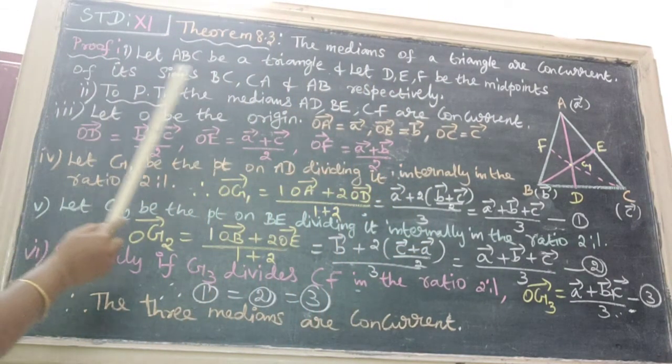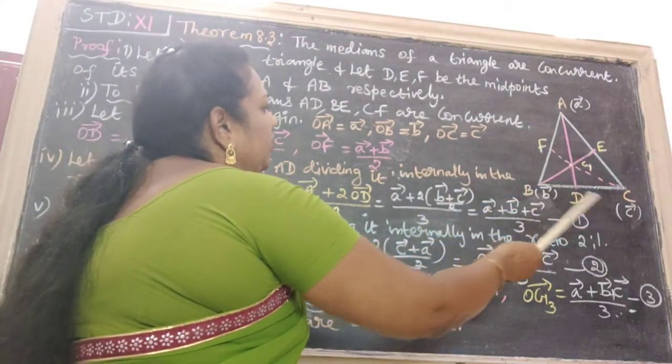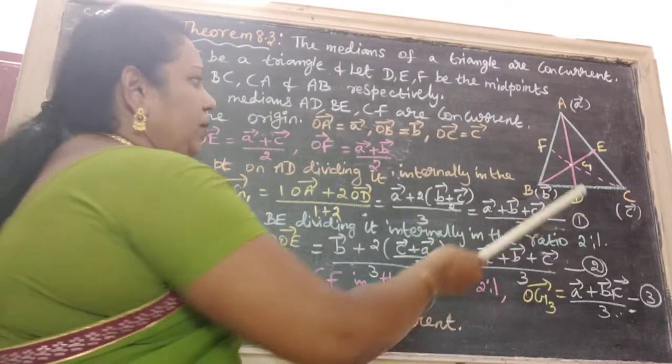Next, to find the position vector OD. OD vector is B vector plus C vector divided by 2. That is the midpoint.